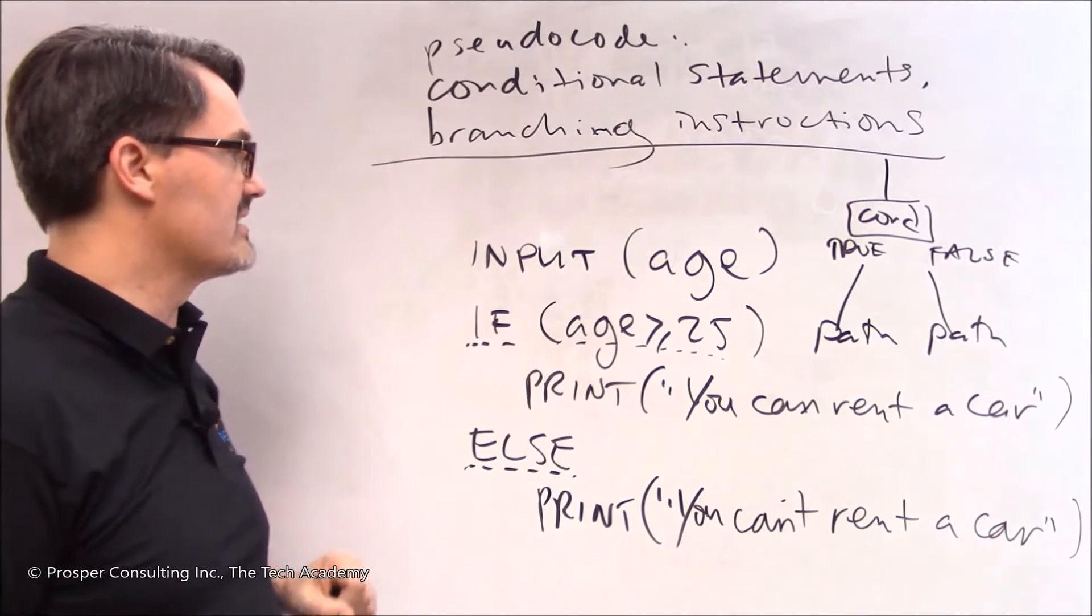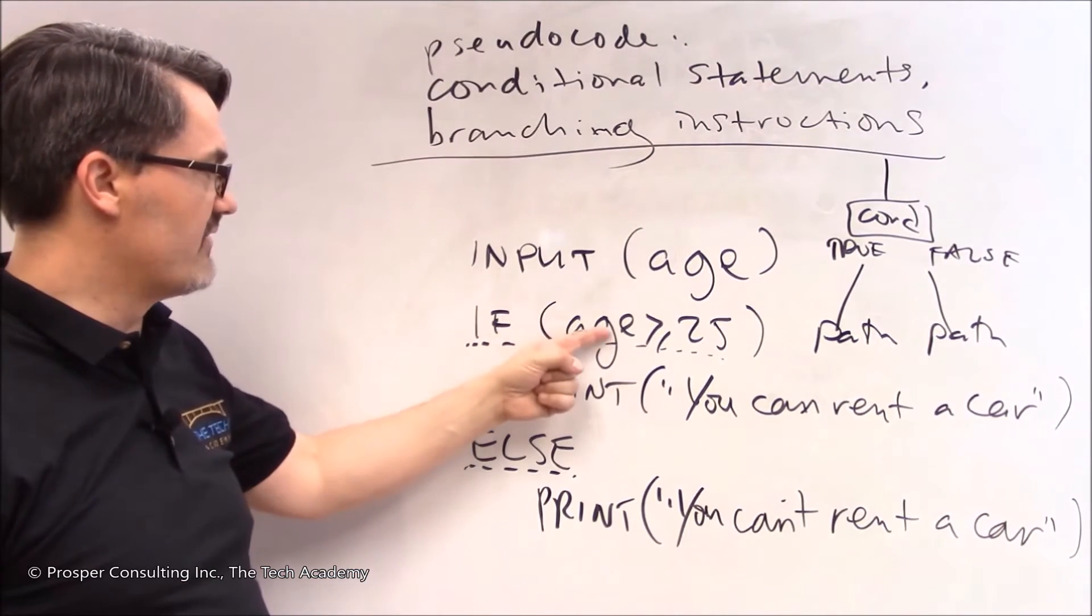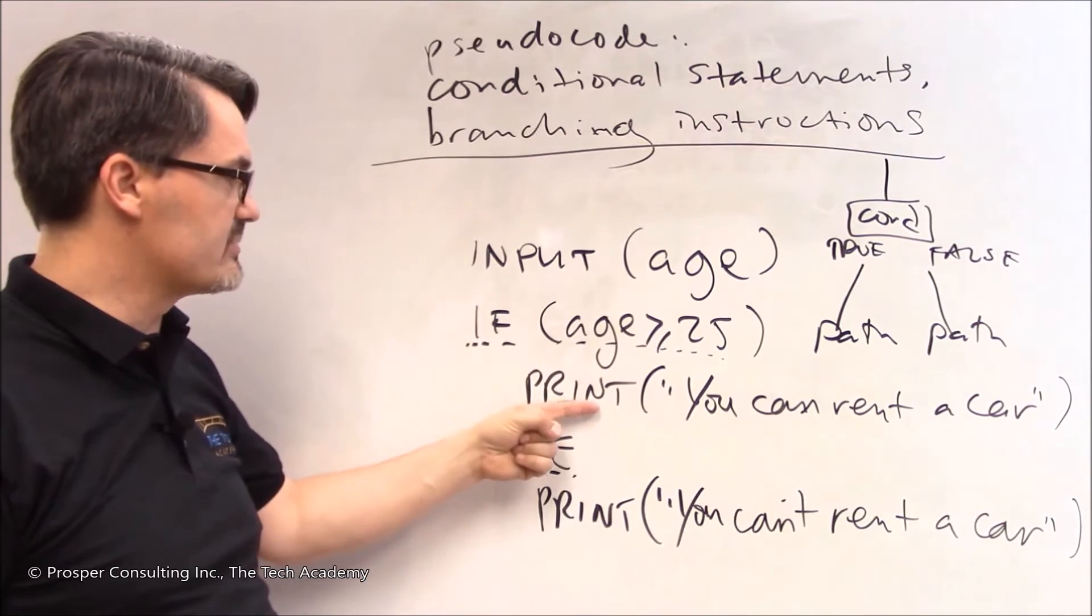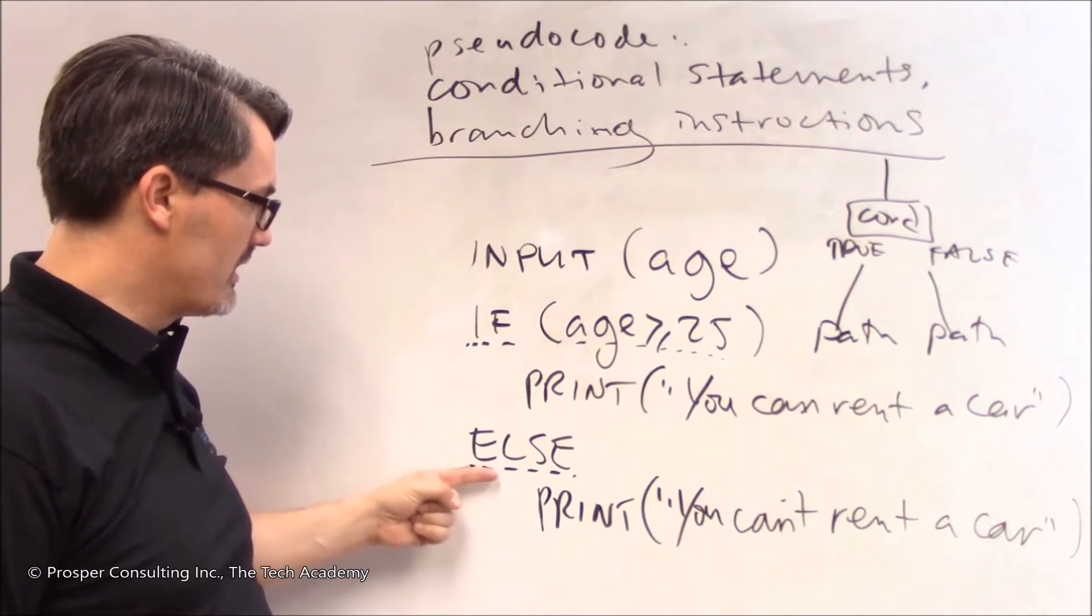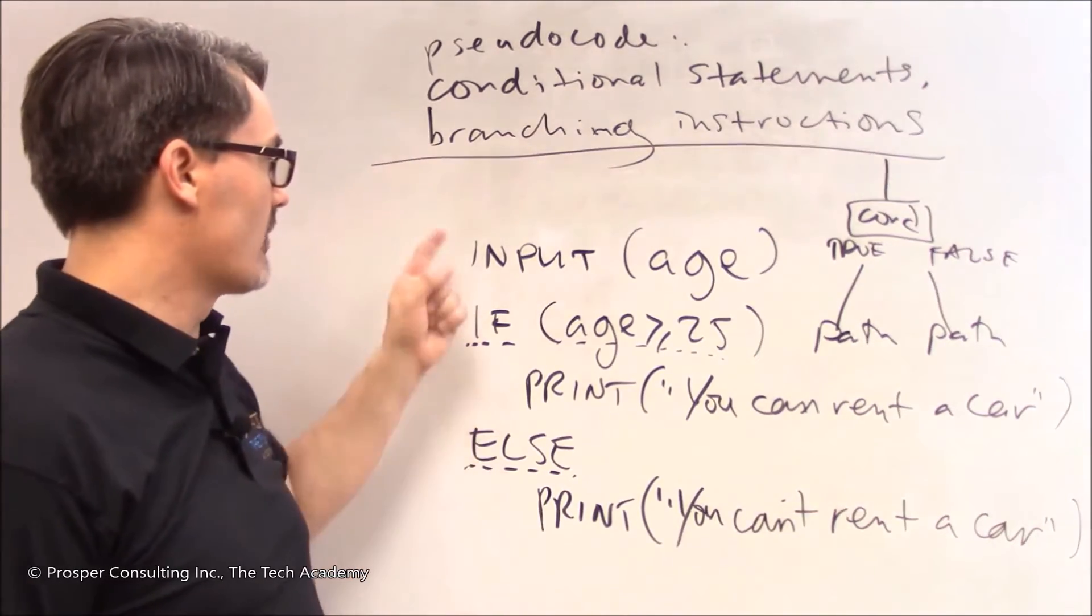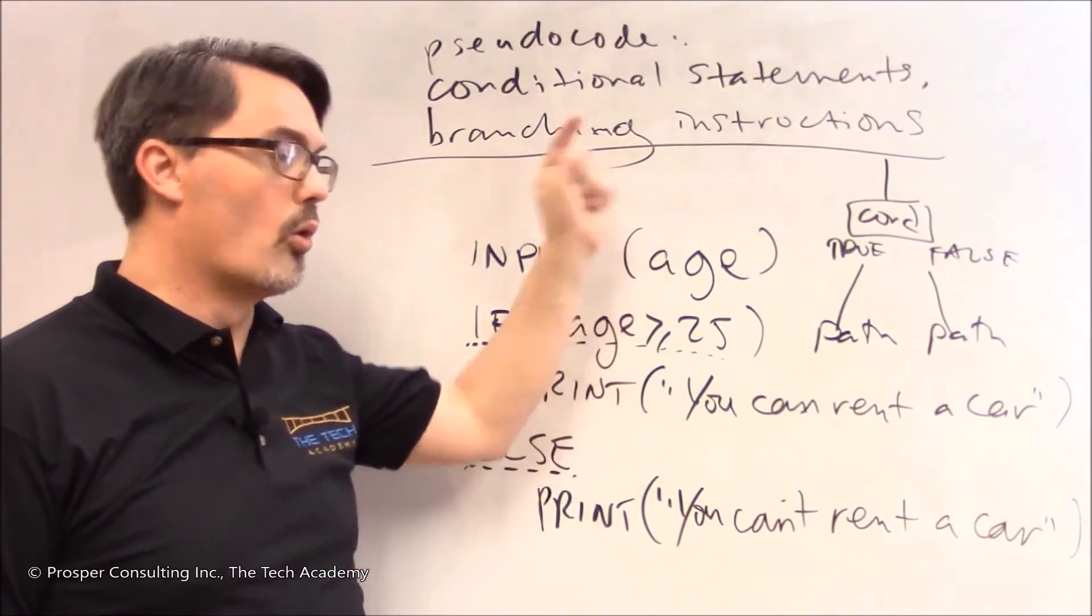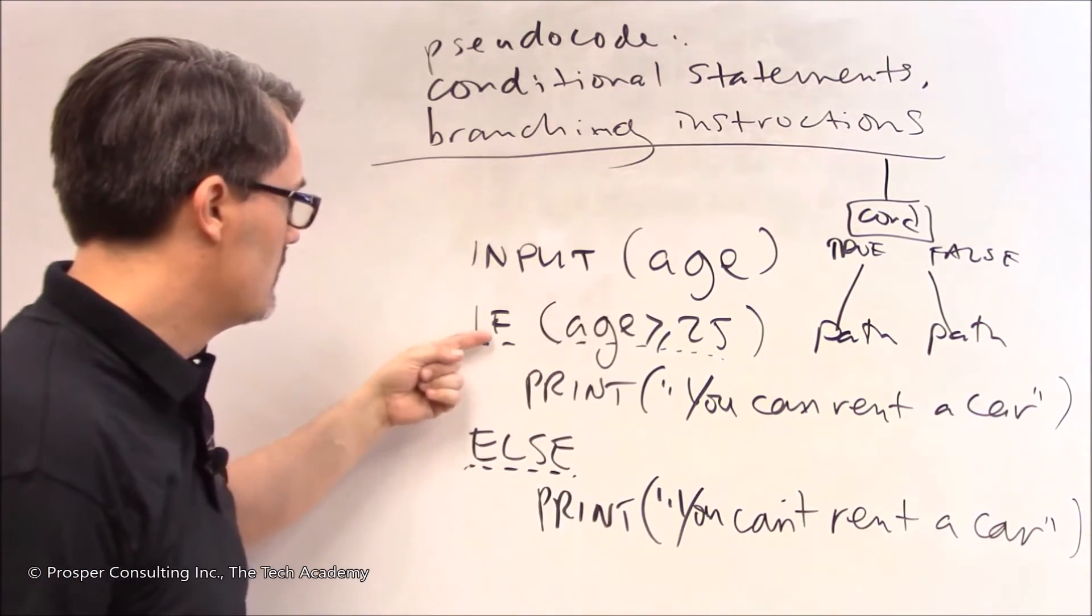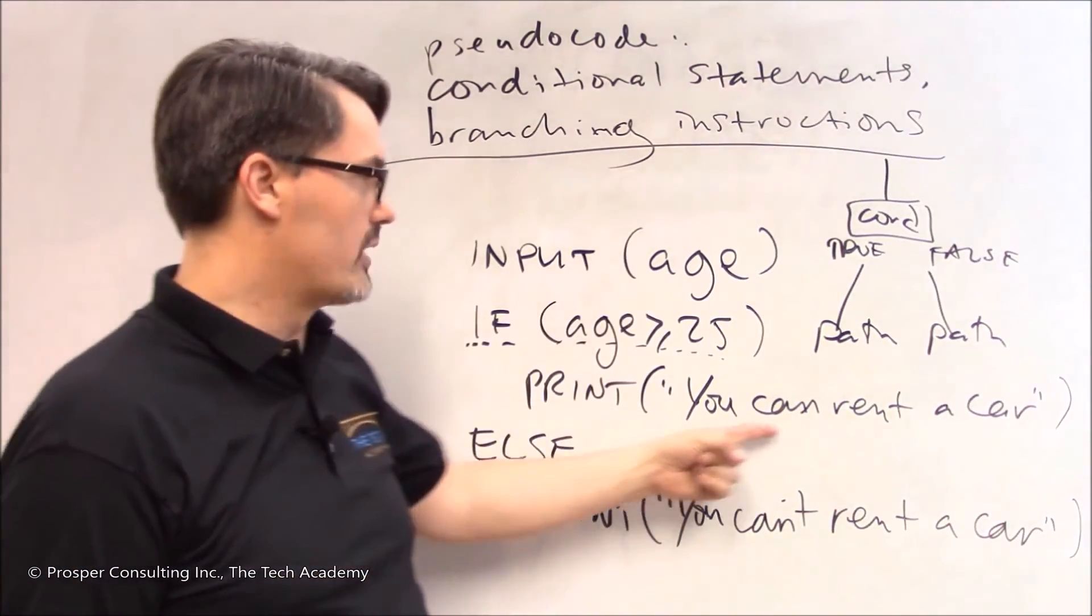So if someone puts in 18, this is evaluated. It's found to be not true. So we don't execute this print. We instead go here to the else and we execute this print. You can't rent a car. If however the person puts in 25 or higher as an age. Say they put in 98. Then we will print you can't rent a car.